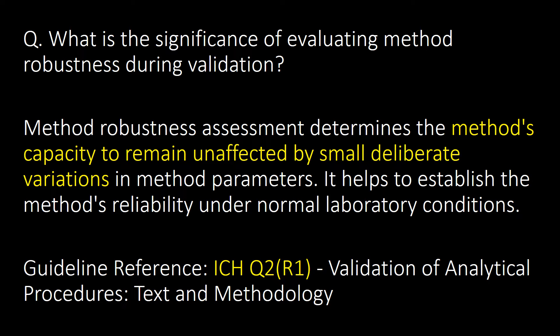What is the significance of evaluating method robustness during validation? Method robustness assessment determines the method's capacity to remain unaffected by small deliberate variations in method parameters. It helps to ensure the method's reliability under normal laboratory conditions. Guideline reference: ICH Q2.